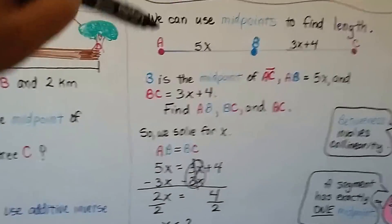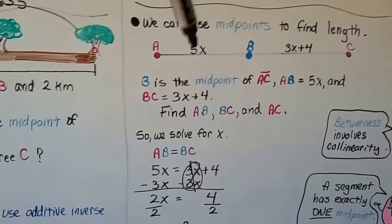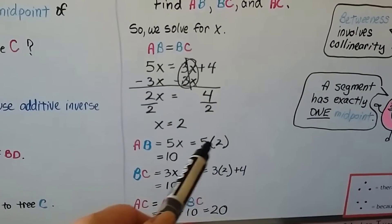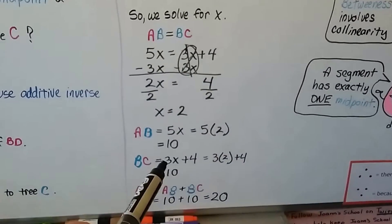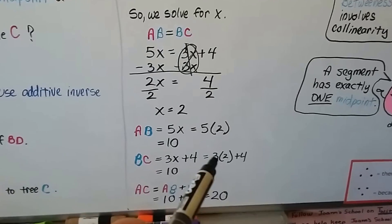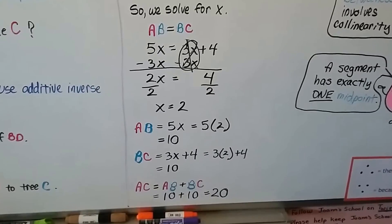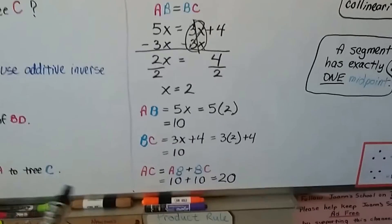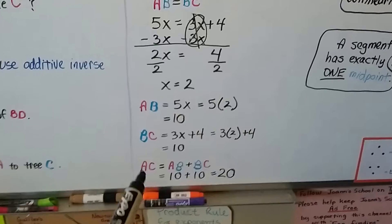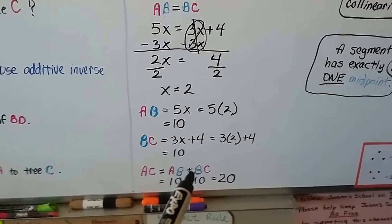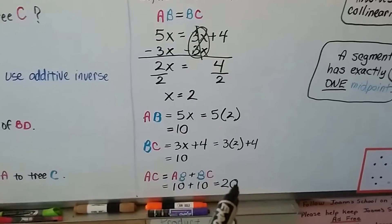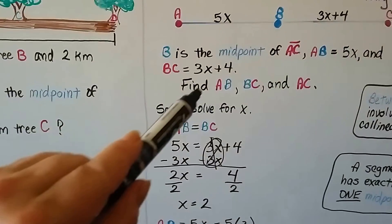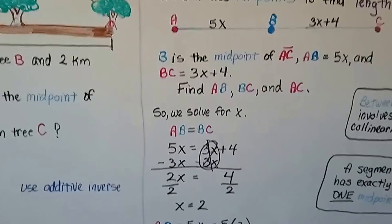So if x equals 2, we can insert that into here, 5 times 2, and 3 times 2 plus 4. 5 times 2 is 10. 3 times 2 is 6 plus 4, which is 10. Yep, they're equal, just like it was supposed to be. So AC would be AB plus BC together. The 10 plus 10 is 20. So now we found that that's 10, that's 10, and that's 20. So we found AB, BC, and AC.